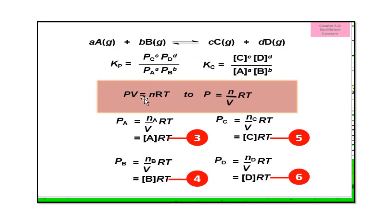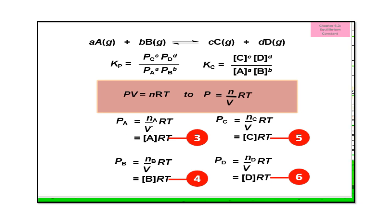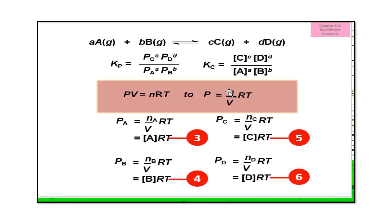From PV = nRT, rearrange to P = (n/V)RT. n/V is concentration. So the partial pressure of A: PA = [A]·RT. Similarly, PB = [B]·RT, PC = [C]·RT, PD = [D]·RT. Substitute these partial pressures into the Kp expression to get the partial pressures of A, B, C, and D expressed in terms of concentration.